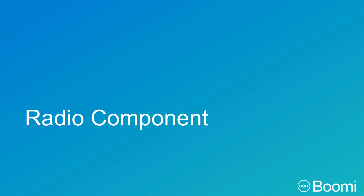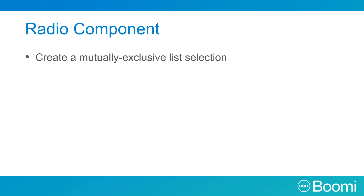In this section we will speak about the radio component. To simply put it, the radio component allows you to create a mutually exclusive list selection. It allows you to select one property of a type, or you are able to make the component multi-select so more than one property of a type can be selected.